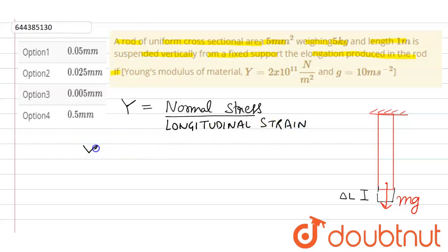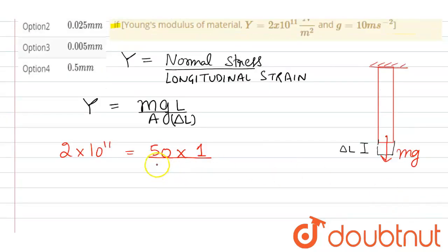So here the normal stress will be force upon area and force will be the weight of the rod, that is mg upon A, times L by ΔL. So in our question the value of mg is given, Young's modulus is also given that is 2 × 10¹¹, m is given 5, g is taken to be 10, length is given 1 meter, and area is given 5 mm², 5 × 10⁻⁶, and we have to find here ΔL.